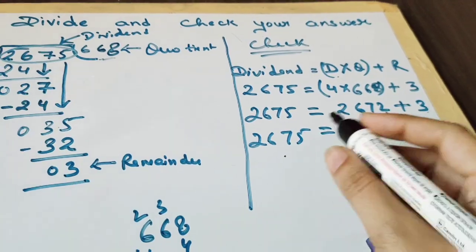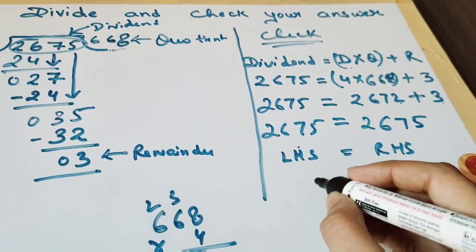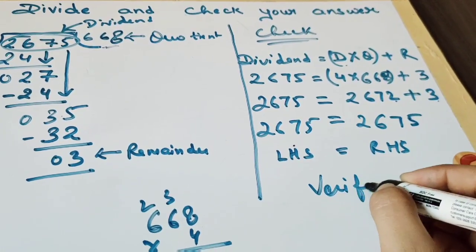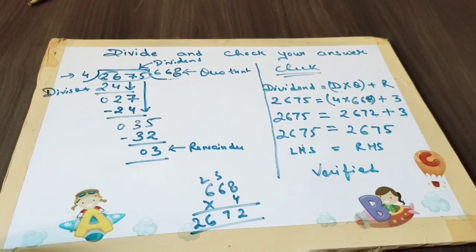So this is LHS equals to RHS, that means it's verified, the answer is correct.